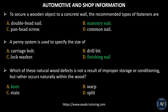The next question: to secure a wooden object to a concrete wall, which of the following recommended types of fasteners are needed? Option A, double-headed nail. Option B, machinery nail. Option C, pan-headed screw. Option D, common nail. The correct answer is Option B, machinery nail.